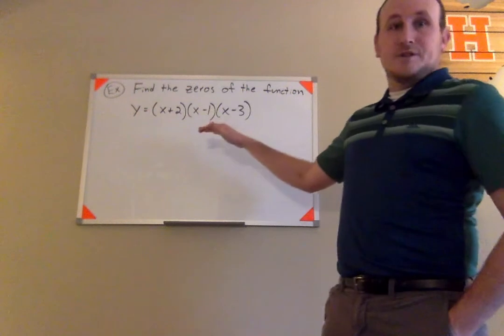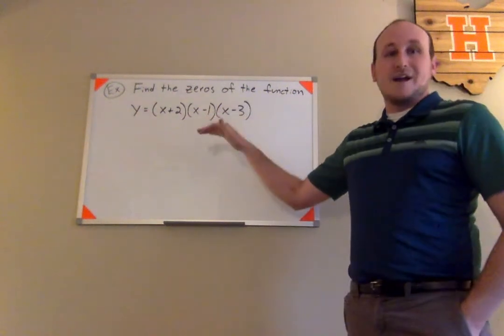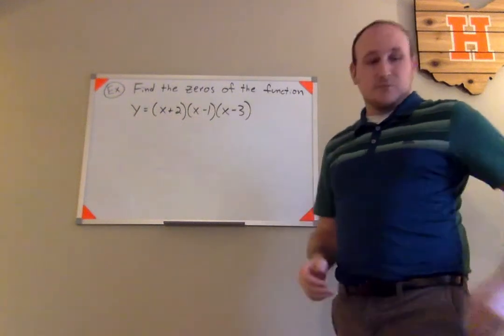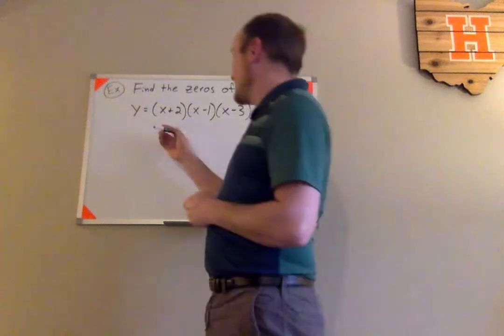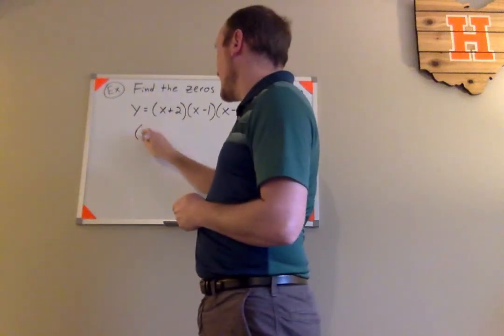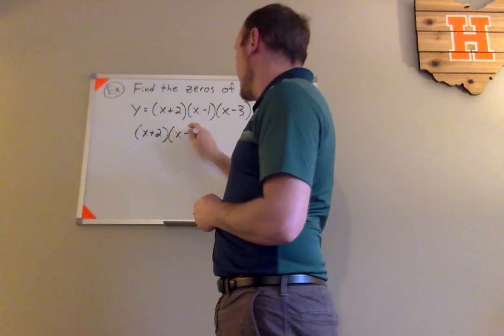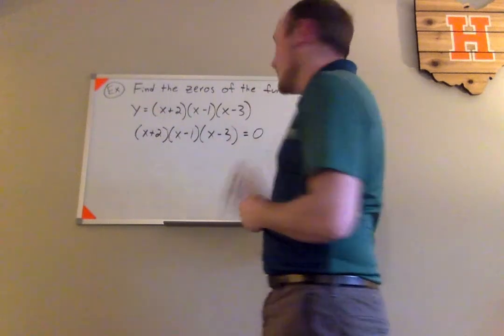Luckily for us, this function is actually already written in its factored form, so we don't have to do any of the factoring like we did in other examples. What we can actually do is we can go ahead and create an equation here by just setting this equal to zero. So we have x plus 2 times the quantity x minus 1 times the quantity x minus 3 is equal to zero.